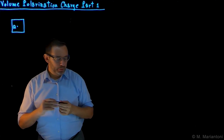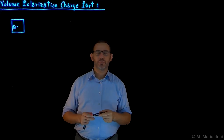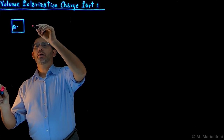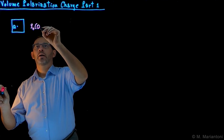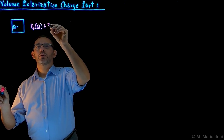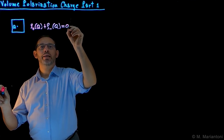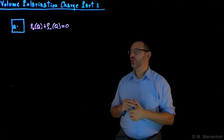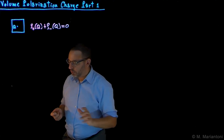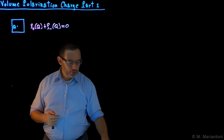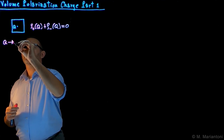We know from local neutrality that no matter what — with or without an inducing external field E-naught — we know that rho_plus, the positive charge distribution density in the neighborhood of point Q, plus rho_minus in the neighborhood of point Q must sum to zero, because the molecules are each neutral. I have capital N molecules in this volume.